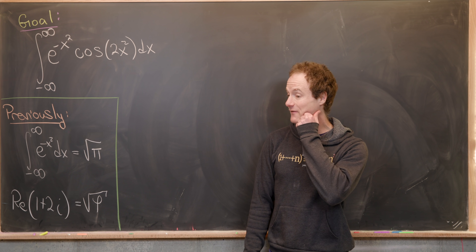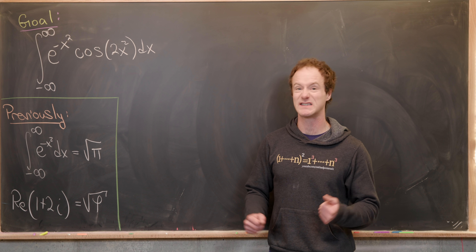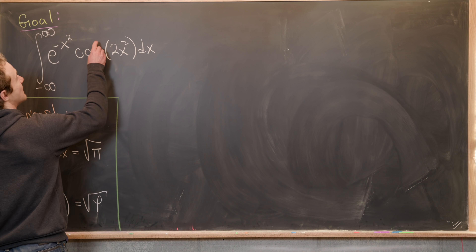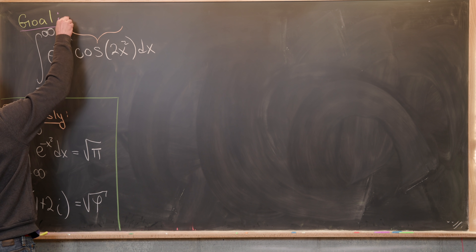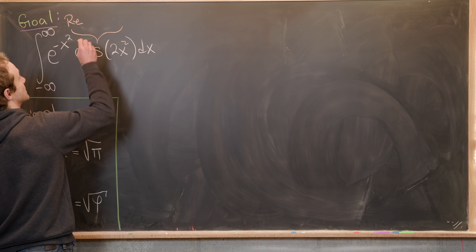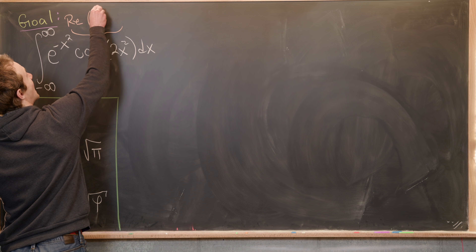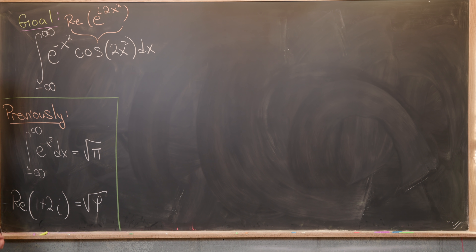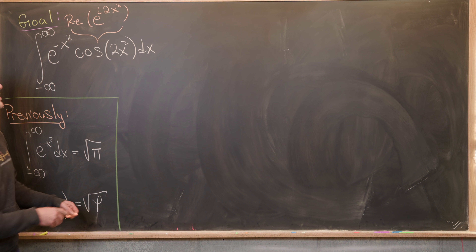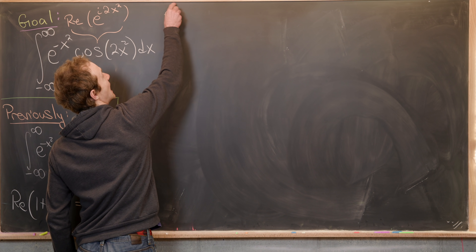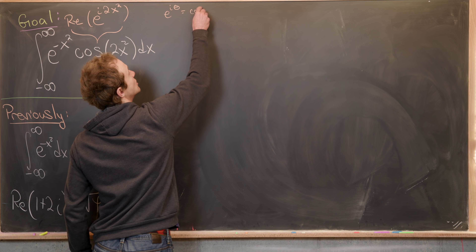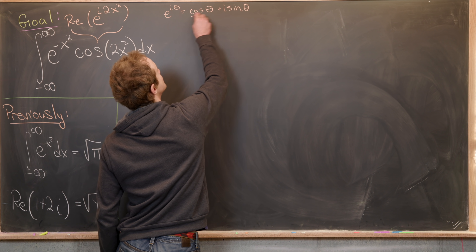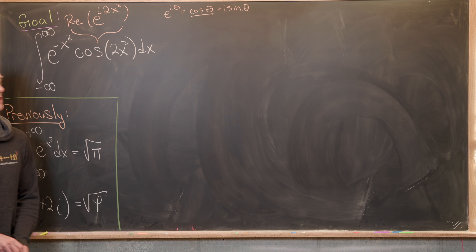Let's recall that cosine of 2x squared is the real part of e to the i times 2x squared. That comes from Euler's formula, which says e to the i theta equals cosine theta plus i sine theta, so the real part is just cosine theta.